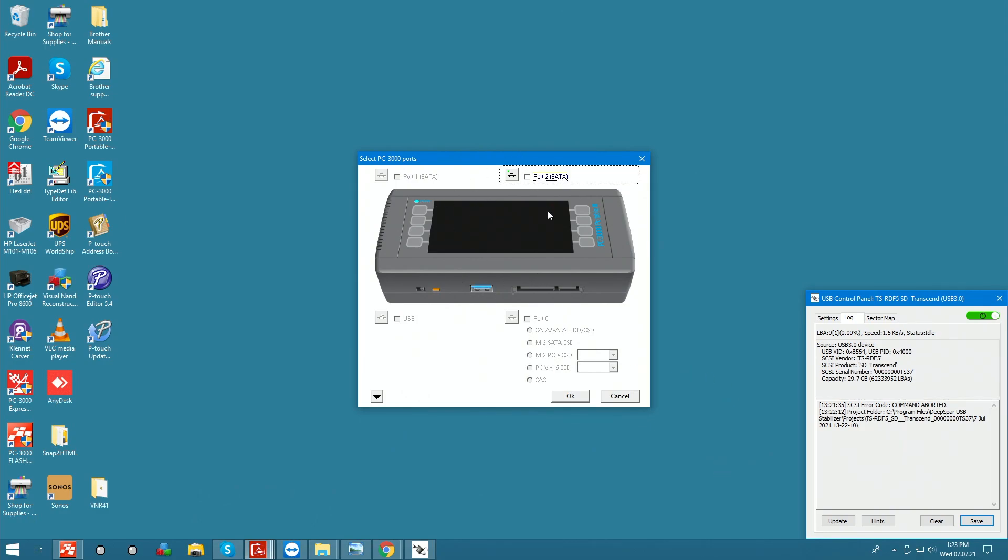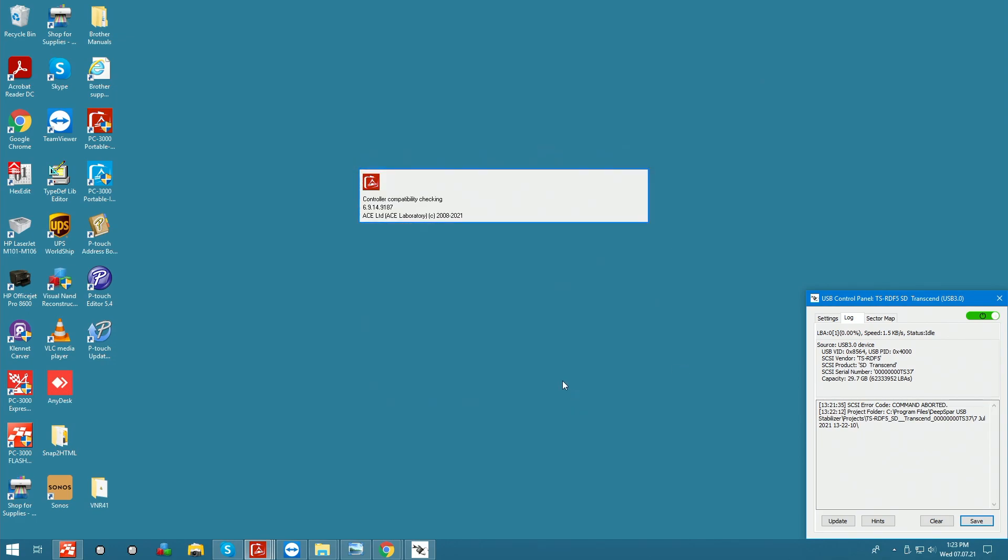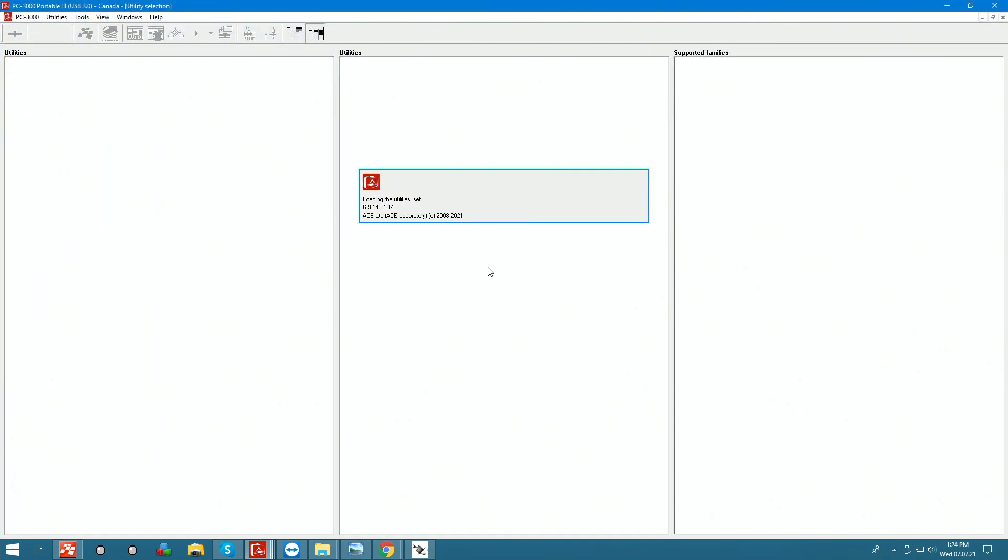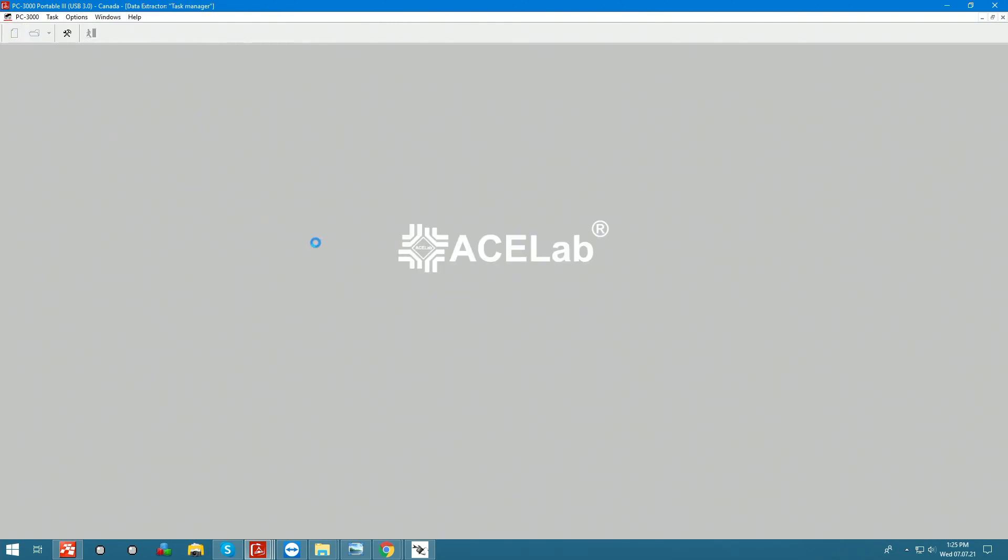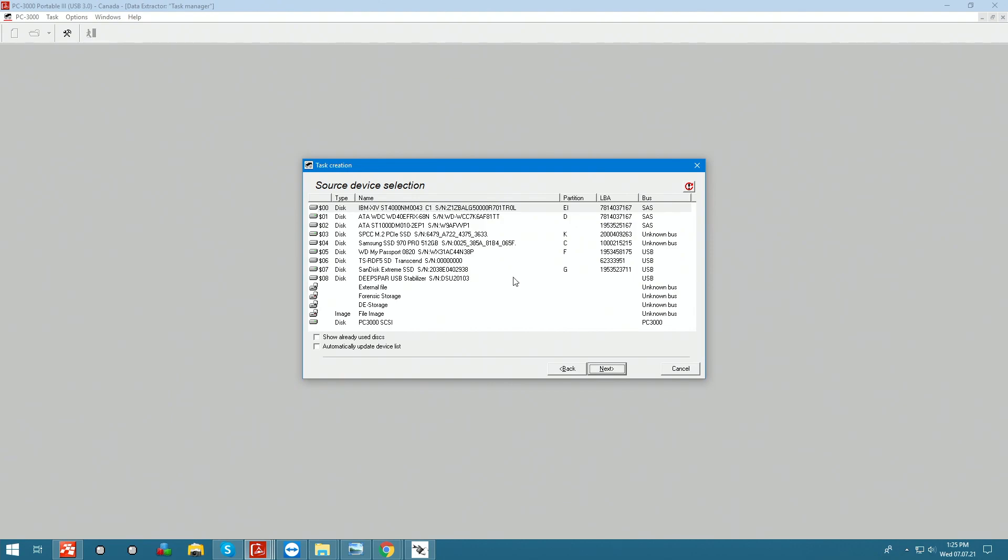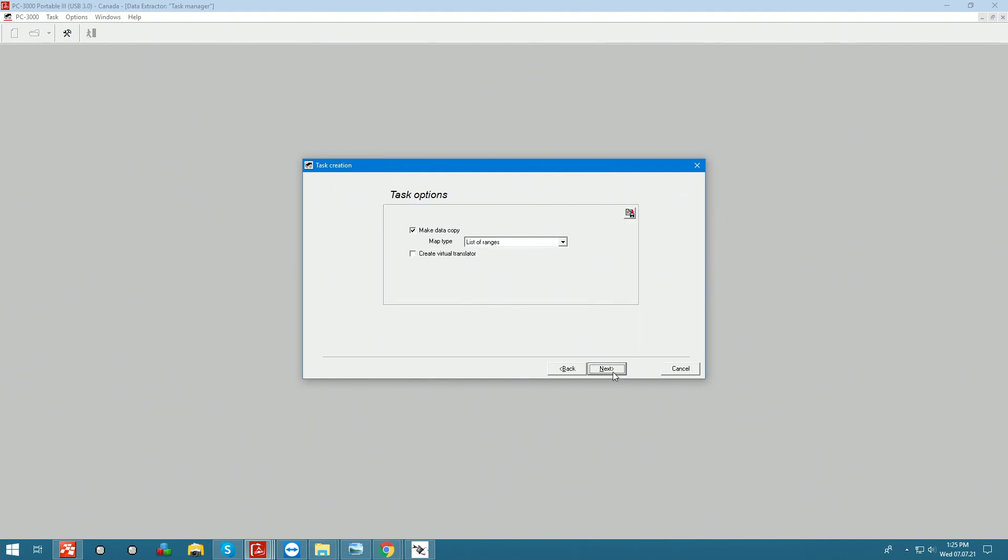Alright, so we're going to open up the PC3000 Portable. No ports are going to be selected because we're working with an external device. This is just solely for disk imaging purposes. Create a new task. Our source device is going to be this card here. Yeah, 32 gigs. Make that a copy and we're going to just make it into an image.